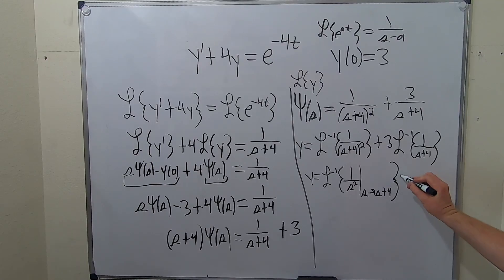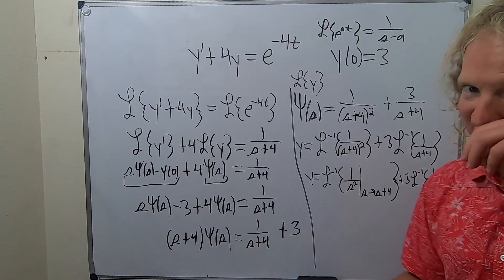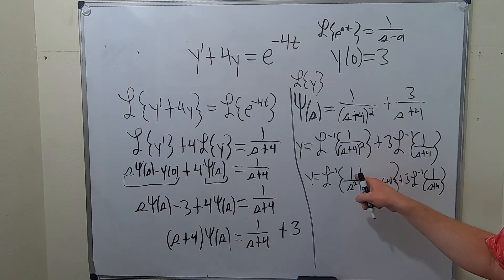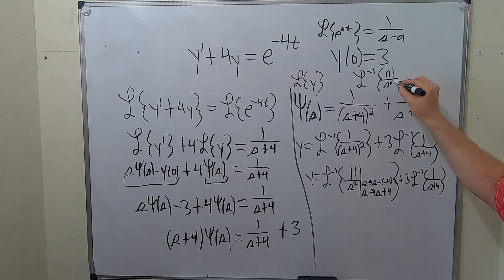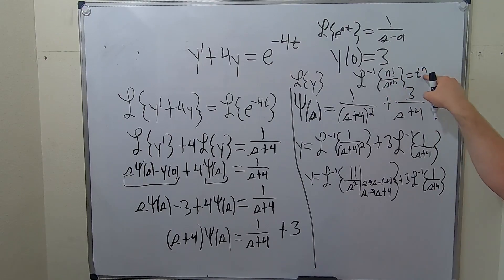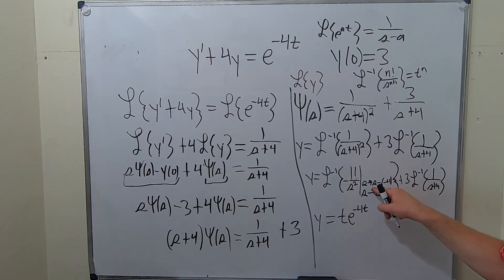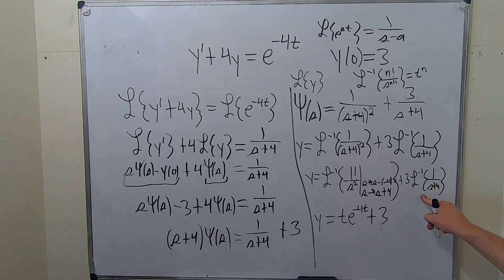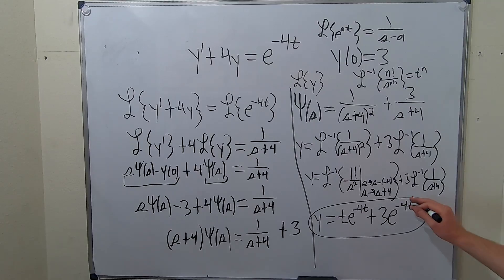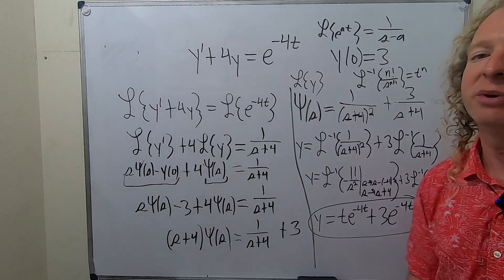The line goes on the inside — that's very important. Recall the formula: the inverse Laplace of n factorial over s to the n plus 1 equals t to the n. Here n is 1, so 1 over s squared gives you t. The shift from s to s plus 4 gives an e to the negative 4t factor. For the second piece, 1 over (s plus 4) is 1 over (s minus negative 4), which gives e to the negative 4t. So the final answer is y equals t·e to the negative 4t, plus 3·e to the negative 4t.